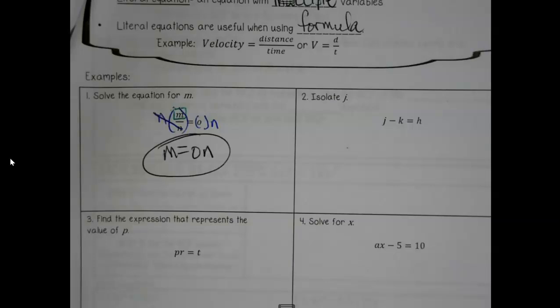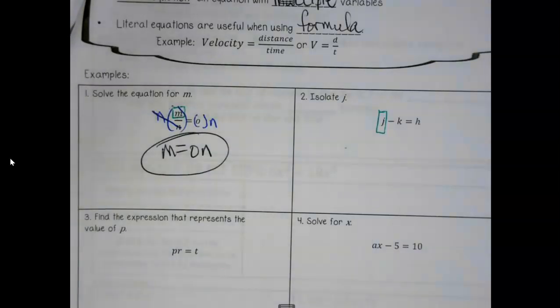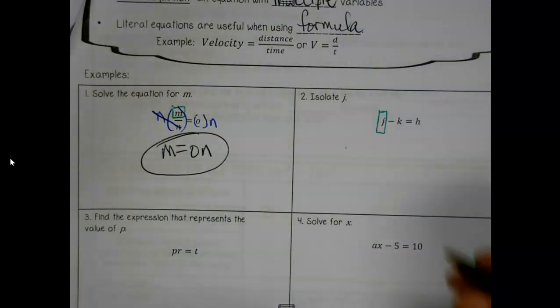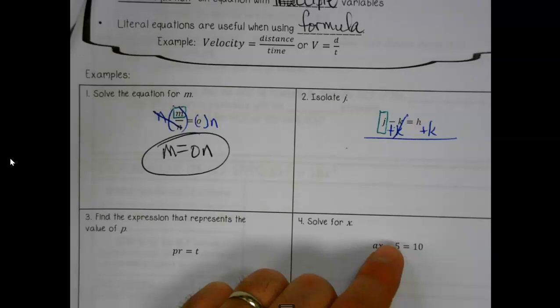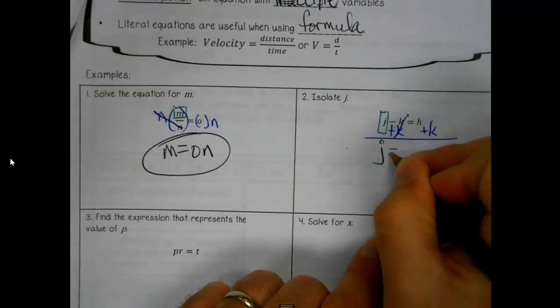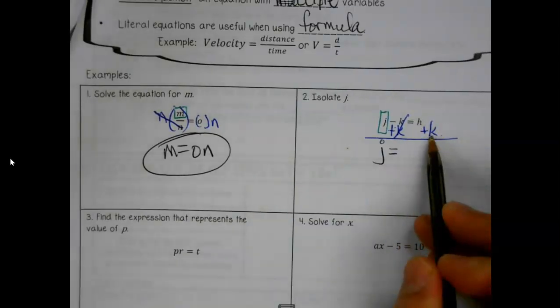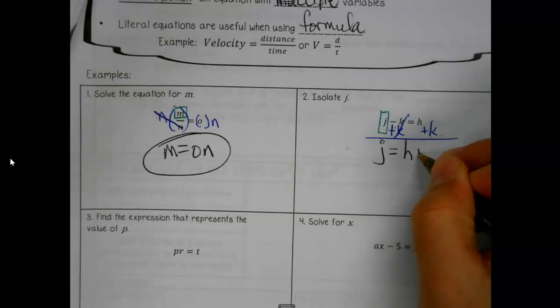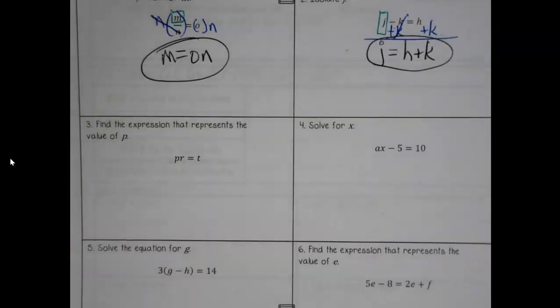You know us well enough to know that as we're doing this, they're not all going to be this easy. You're right. What I am going to tell you is this though - little things to make sure, like here it could be really tempting to just write hk, but we've got to make sure that plus stays. They're not like terms, they're not both h's, so I can't put them together. That's the type of little stuff that I'm going to be more interested in you watching out for.